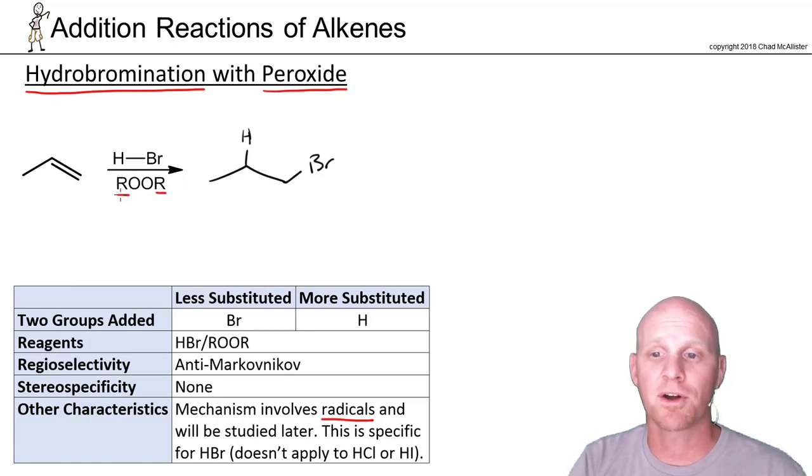If you add peroxide with HCl or HI, they don't go anti-Markovnikov. They still go Markovnikov. It doesn't serve any purpose there, that peroxide. This is specific to HBr. I just don't want you to come away with the idea that adding peroxide changes any reaction to go anti-Markovnikov. No, it's specific for just HBr.